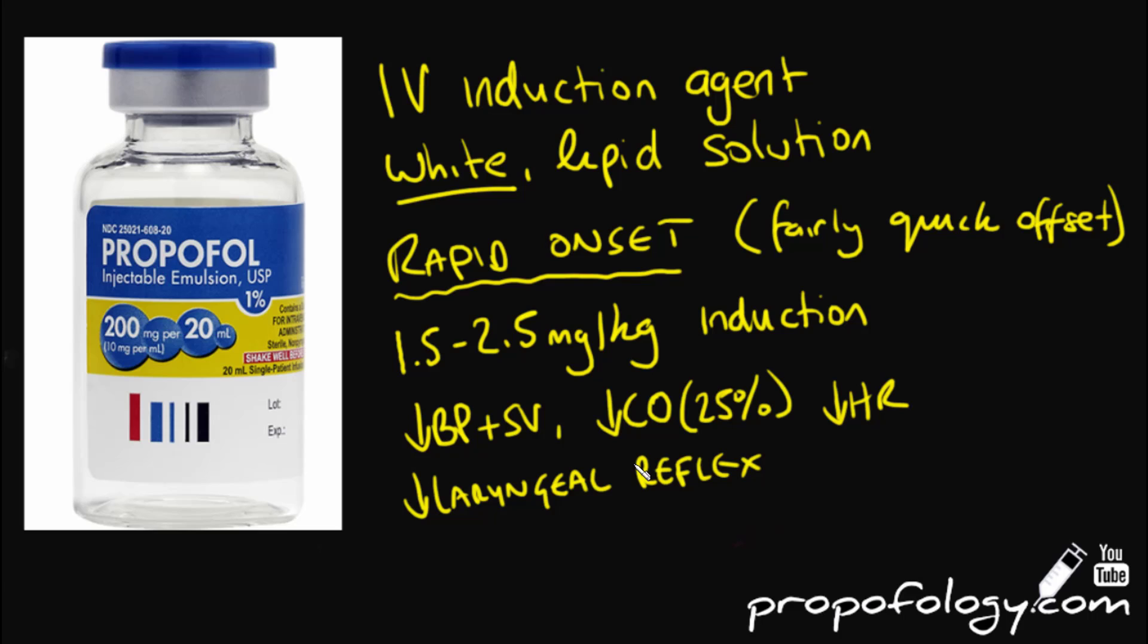Propofol will cause respiratory depression and one of the good effects of it is that it decreases your laryngeal reflex whenever we're looking in with a laryngoscope. It'll increase your respiratory rate but drop your tidal volume, and it will decrease the response that your body has to increased levels of CO2 and hypoxia. It's also a bronchodilator, but not as profound as ketamine. Interestingly, it has antiemetic properties, probably because of its role at the 5-HT3 receptor, and is used in the treatment of refractory post-operative nausea and vomiting.